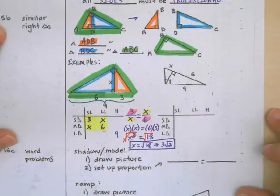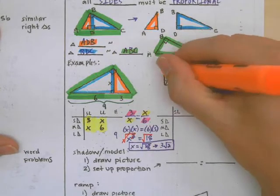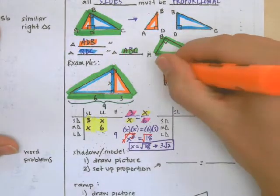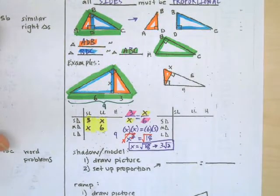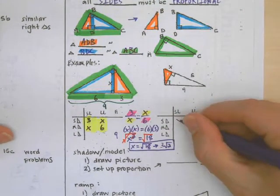In the next example, here's our small triangle. All we know about this small triangle this time is that the short leg is X.